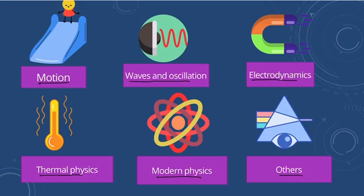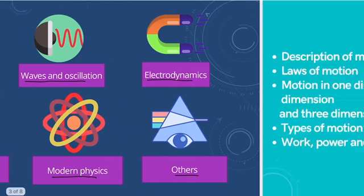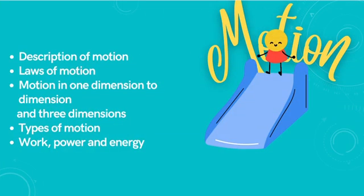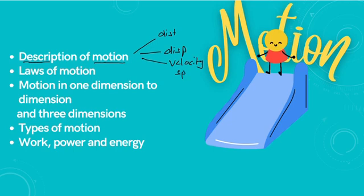Let us look at the first part — motion. This is a very important part where we are going to understand how to describe motion. Describing motion includes various parameters and factors such as distance, displacement, velocity, speed, acceleration, and so on. We are also going to learn the laws of motion, which include Newton's three laws that help us predict and analyze motion.